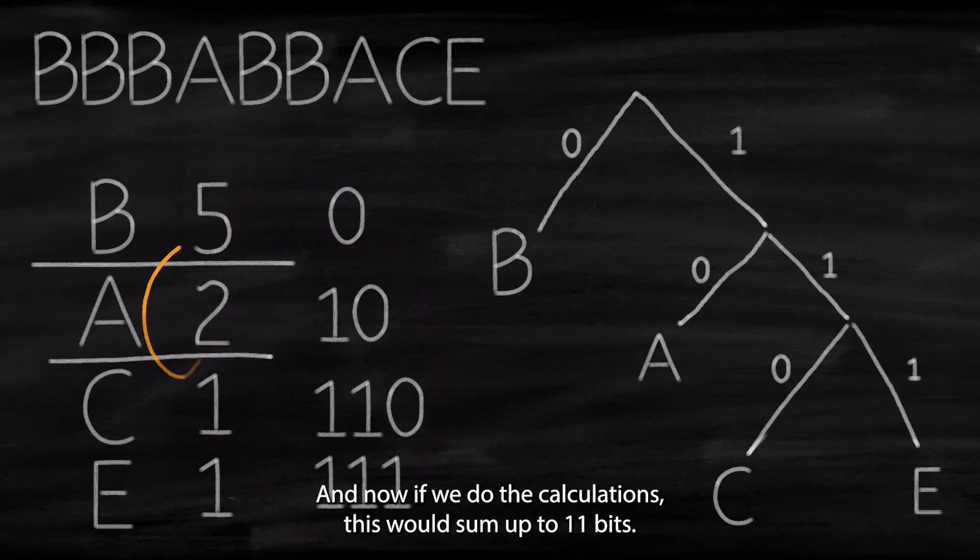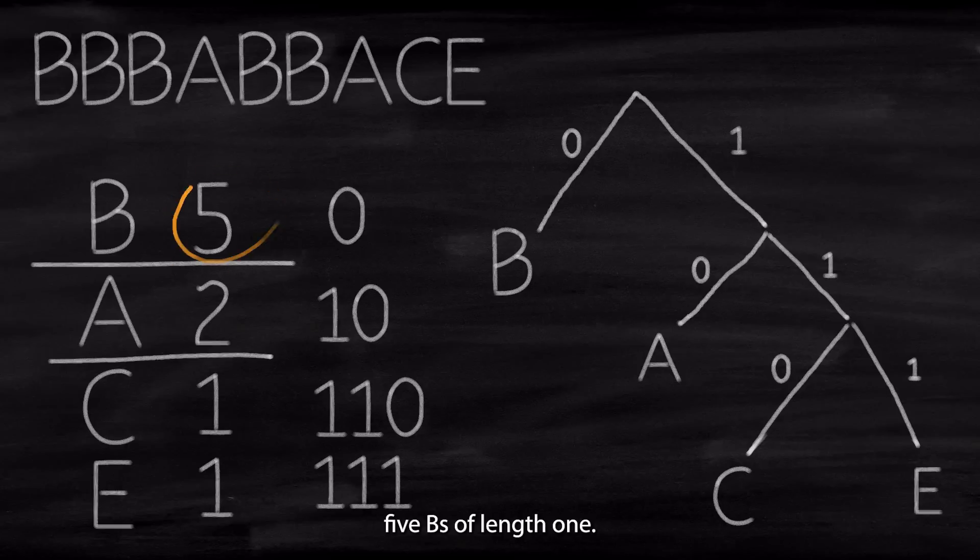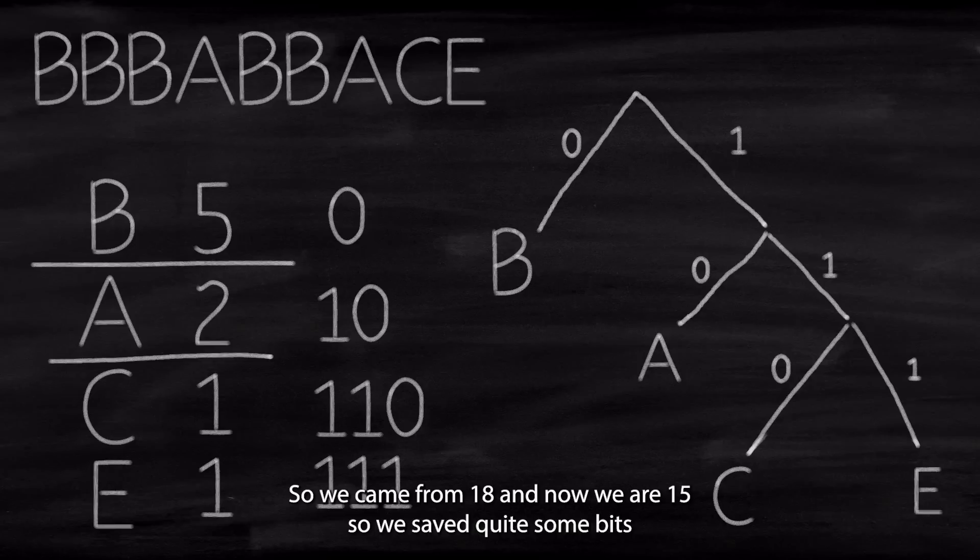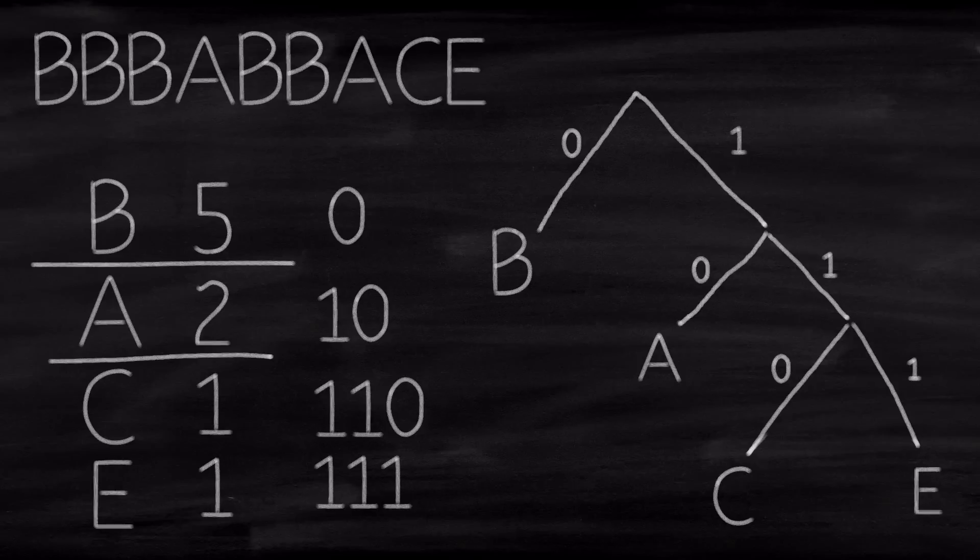And now if we do the calculations, this would sum up to 11 bits. So we have got 5 Bs of length 1. So that's 5 plus 2 of length 2. That's 9. And then we have got 2 3s. So that would be 15 in total. So we came from 18 and now we are at 15. So we saved quite some bits. And hopefully you could save much more if you have a bigger file or bigger set of data.